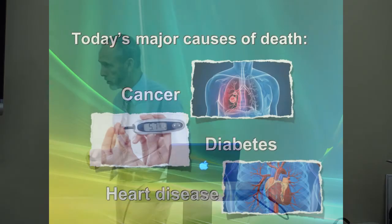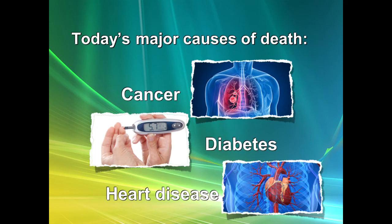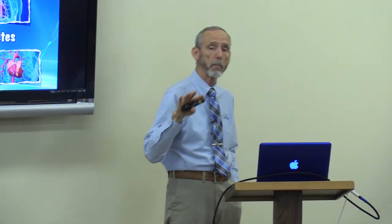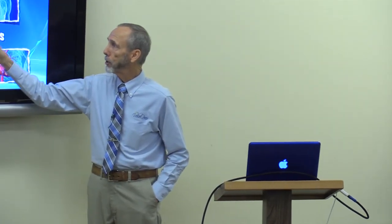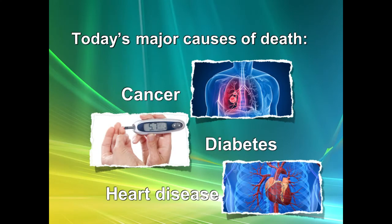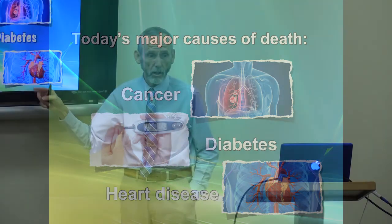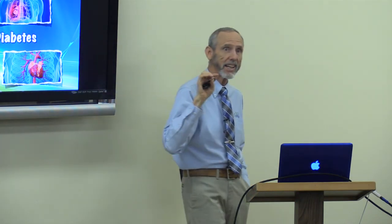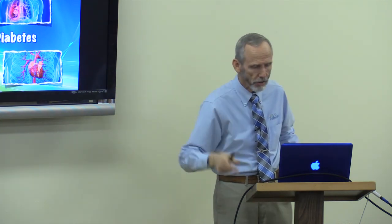Today's major topic: we talked in the last class about the diseases of the Egyptians, the major diseases. Basically, the major causes of death in America are cancer, heart disease, and diabetes. Now, diabetes is usually listed as the number 10 cause of death, but it greatly increases your risk of cancer up to 400% and heart disease up to 400%, so basically it is a factor in the other diseases.